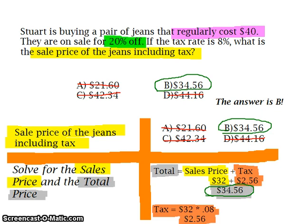In order to find the total price, we added our sales price plus our tax: $32 plus $2.56 is $34.56. So yes, our answer choice B is correct. Talk to you soon.